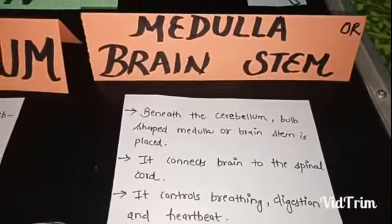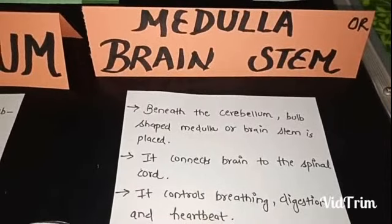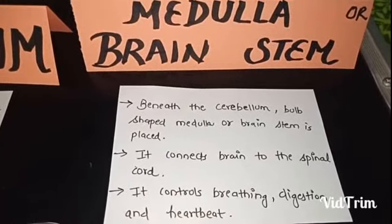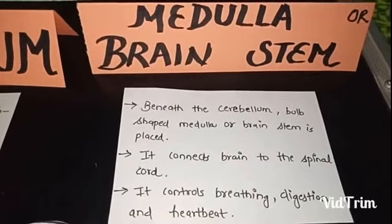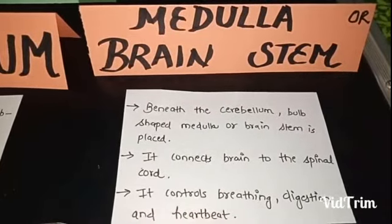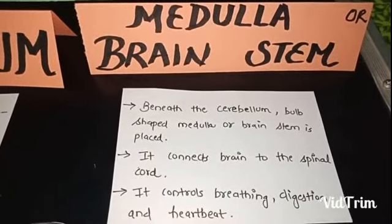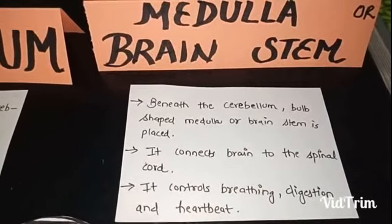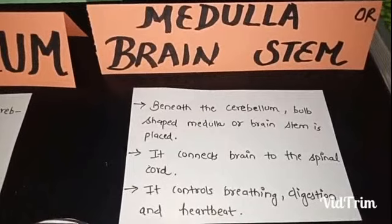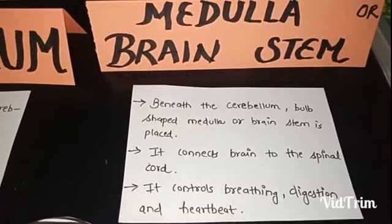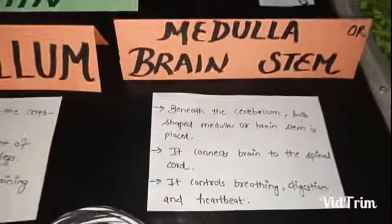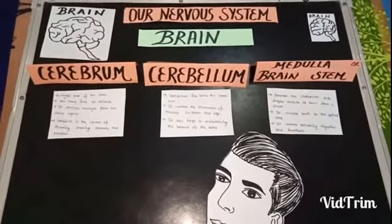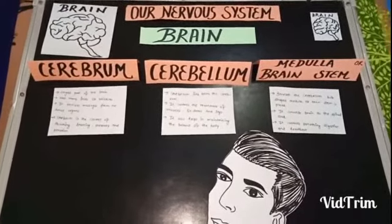Third and last, we have the medulla, or brain stem. Beneath the cerebellum, the bulb-shaped medulla or brain stem is placed — remember its shape is just like a bulb. It connects the brain to the spinal cord. It controls breathing, digestion, and heartbeat. So I hope the concept of the brain is now clear.